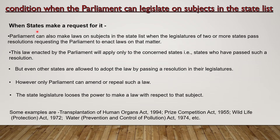The next condition is when states make a request for it. Parliament can also make laws on subjects in the State List when the legislatures of two or more states pass resolutions requesting Parliament to enact laws on that matter. The law enacted by Parliament will apply only to the concerned states, i.e., states who have passed such a resolution. Other states are also allowed to adopt the law by passing a resolution in their legislatures. However, only Parliament can amend or repeal such a law. Some examples are the Transplantation of Human Organs Act 1994, Price Competition Act 1955, Wildlife Protection Act 1972, and Water Prevention and Control of Pollution Act 1974.